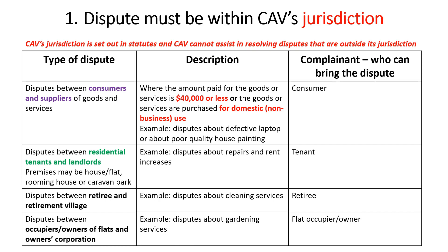Alternatively, a consumer might have a dispute with a house painter about poor quality house painting. Even if the amount paid was more than $40,000, the fact that the painting is of a house means that the service is for domestic use. It would be different if the painter was painting an office block, because in that case the painting service would have been provided for a business use and not a domestic use. In that case, Consumer Affairs Victoria would not have jurisdiction to assist in resolving the dispute.